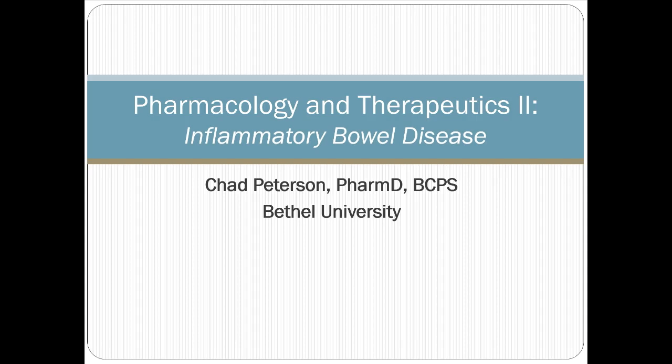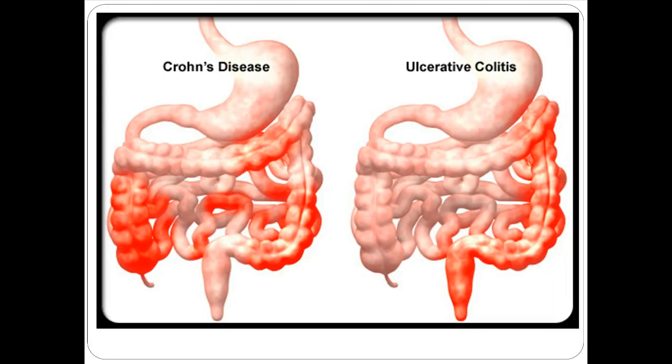Inflammatory bowel disease — we're going to talk about both Crohn's and ulcerative colitis. Crohn's is a disease that can occur anywhere in the GI tract, mouth to anus. There are certain areas that are much more common.